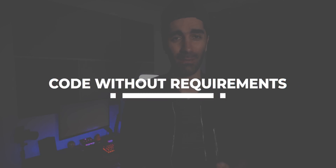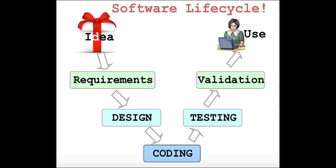The next mistake is starting to code without having all the requirements. I've mentioned this on my channel before but it's important to reiterate because I see it happen all the time. Here's one of my all-time favorite diagrams of the software development life cycle: first you have an idea, then requirements, then design, then you start coding, then testing, validation, and finally the end user starts to use it. Coding is really just one part of the entire diagram, but I see it time and time again where people jump into the code without really understanding the requirements.